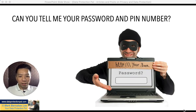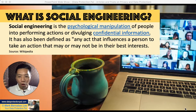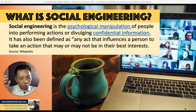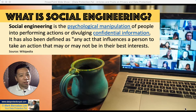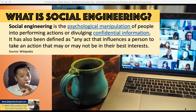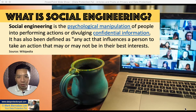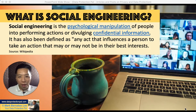So, how do we define social engineering? According to Wikipedia, social engineering is a psychological manipulation of people into performing actions or divulging confidential information, and is also defined as an act that influences a person — probably you or me — to take action that may or may not be in their best interest. And more often than not, social engineers do it for their own interest and not for yours.